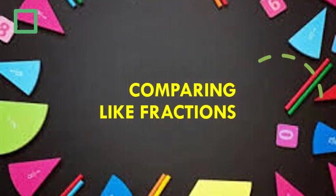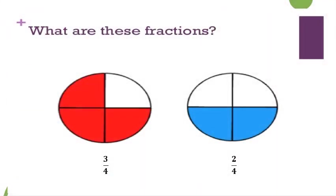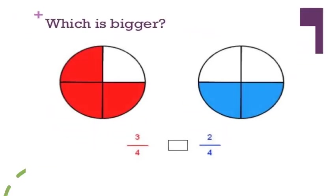Here we come to the next topic: comparing like fractions. Before proceeding, recall that like fractions are fractions having the same denominator. Looking at a circle divided into 4 parts: the first has 3 parts colored — fraction 3 by 4; the second has 2 parts colored — fraction 2 by 4. Comparing the pictures, the circle on the left has more colored parts, so that fraction is bigger.